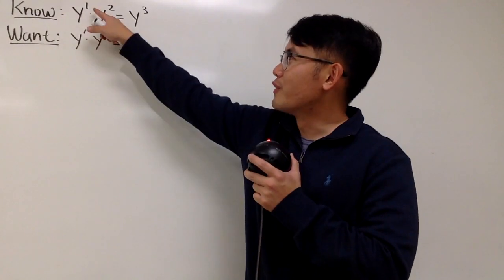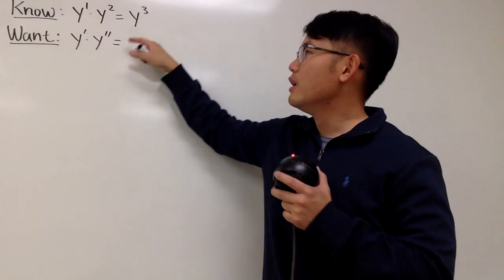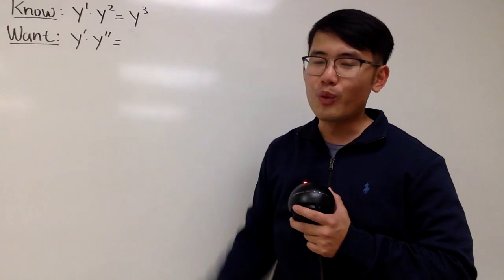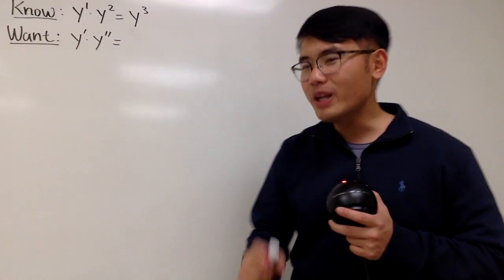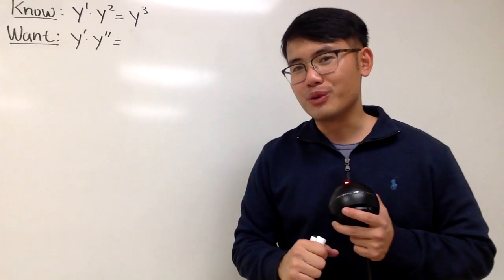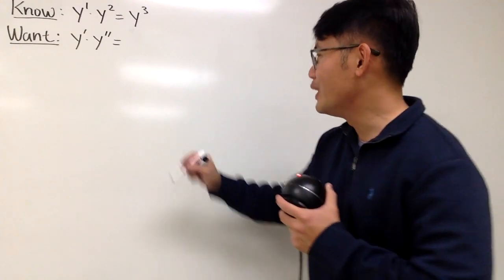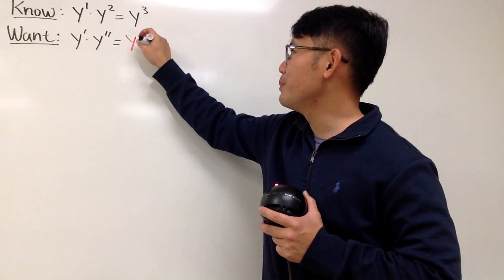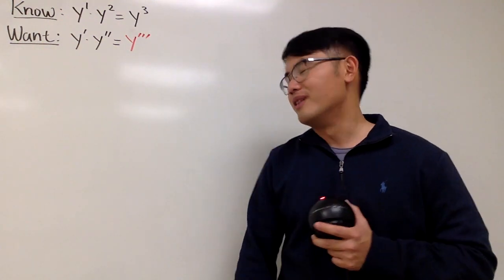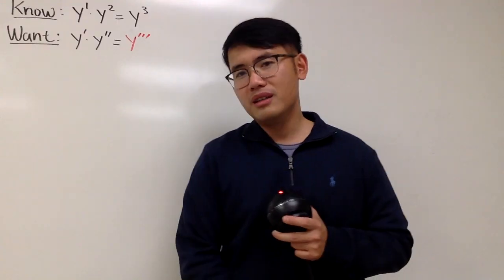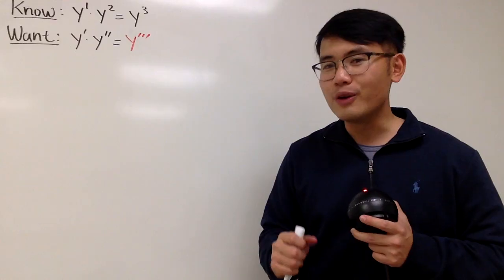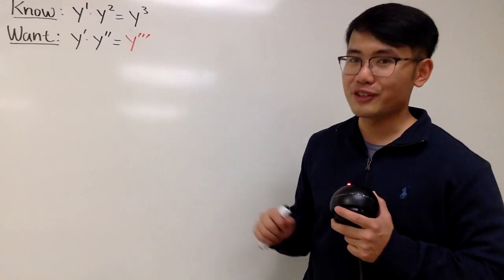As we all know, when we have y to the first power times y to the second power, we can just add the powers up together and we get y to the third power. But have you ever thought about: what if we have y prime times y prime? What are we going to get? Well, why don't we put down y triple prime? This would be so cool, isn't it? However, this right here is not always true, but it's true for some functions, such as the linear function.